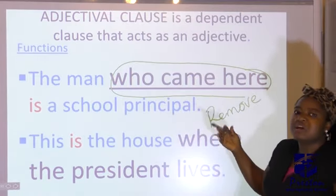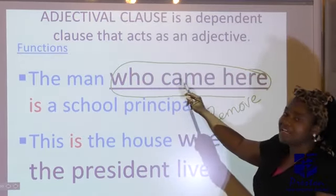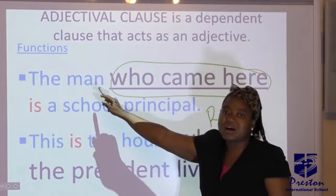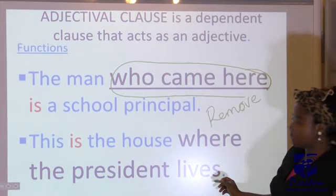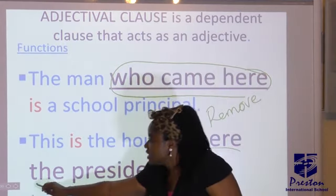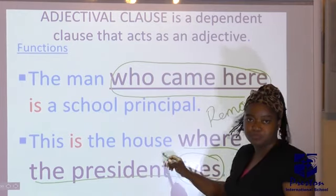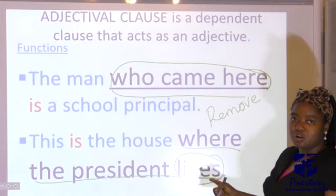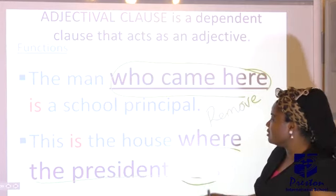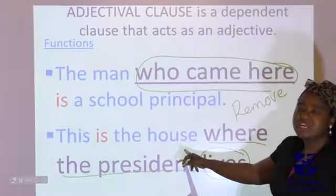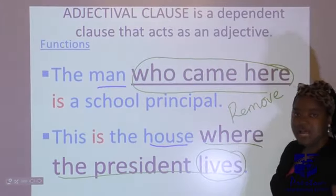We can read the sentence without the adjectival clause: 'The man is the school principal.' The adjectival clause is only telling us more about the man — the school principal, not another man who may just be a teacher. 'Who came here' has a finite verb and gives us more information about the noun 'man.' Another example: 'This is the house where the president lives' — 'where the president lives' is an adjectival clause. It has a finite verb and tells us more about the noun 'house.' A key check: the adjectival clause must come just after the noun it is qualifying.